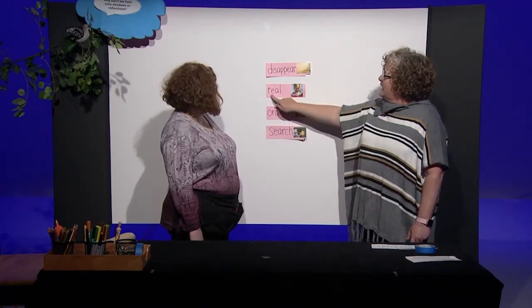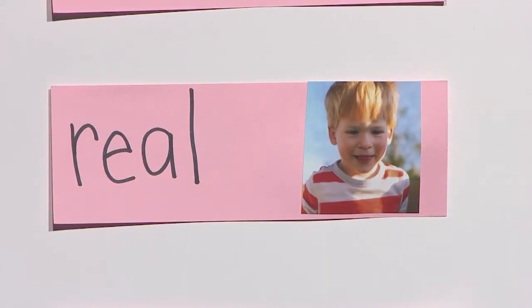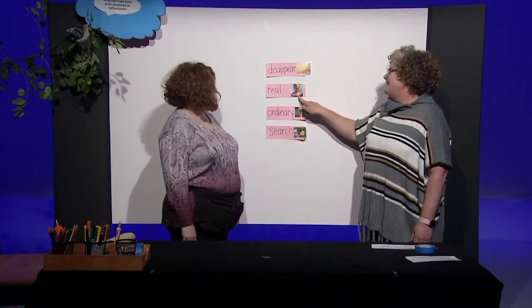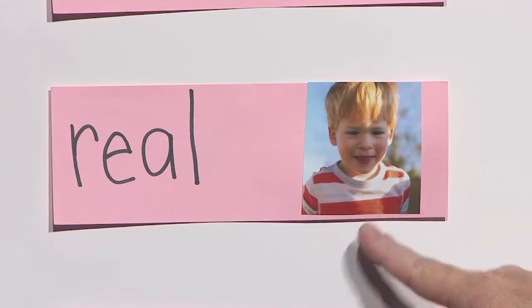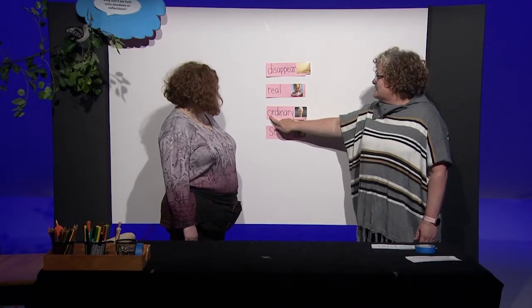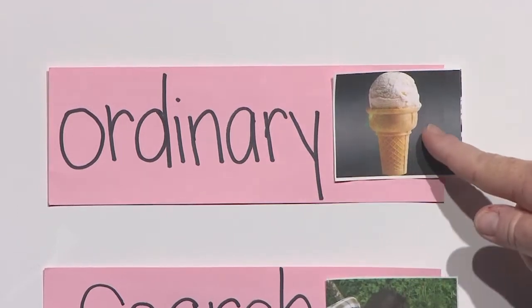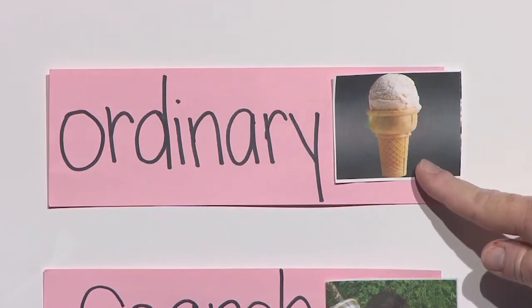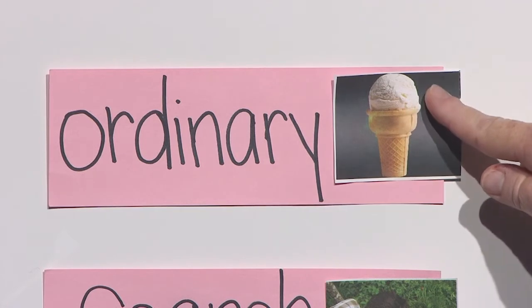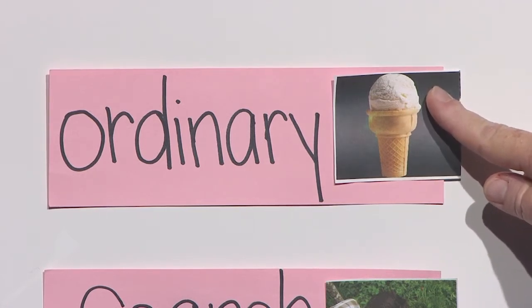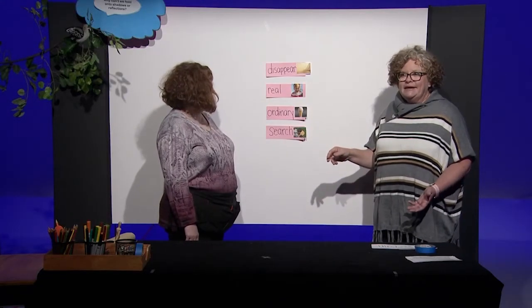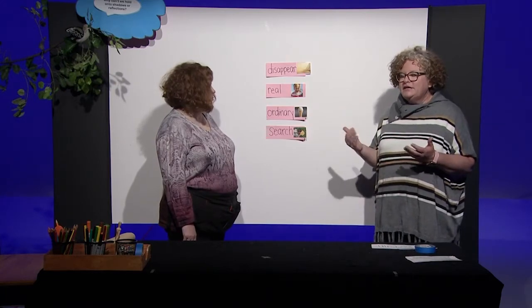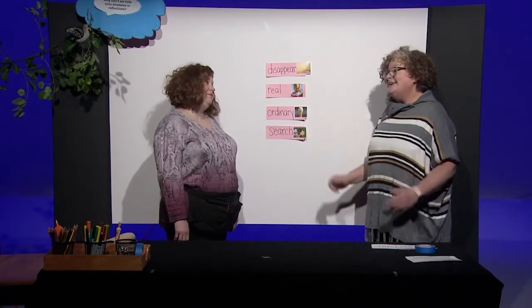This word right here is real. Real means not fake or not pretend. This is a real child — he's my son, it's not pretend. This word right here is ordinary, and I put a picture of vanilla on just a plain cone because vanilla ice cream, there's nothing special about it — it's not like Superman ice cream with different colors or swirls of flavor. It's just ordinary vanilla. But still good!